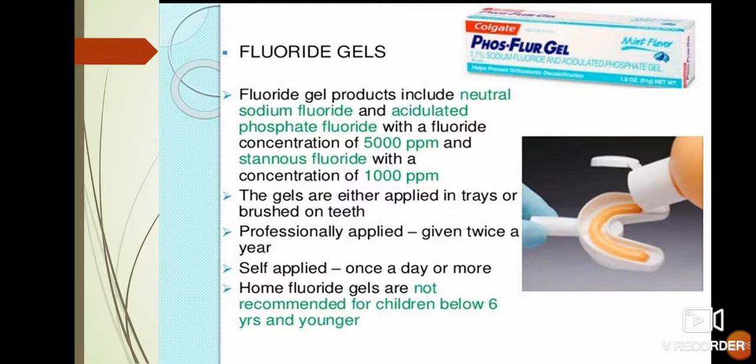Fluoride gels: fluoride gel products include neutral sodium fluoride and acidulated phosphate fluoride with a fluoride concentration of 5,000 ppm, and stannous fluoride with a concentration of 1,000 ppm. The gels are either applied in a tray or brushed on teeth. Professionally applied can be given twice a year. Self-applied can be given once a day or more. Home fluoride gels are not recommended for children below 6 years and younger.